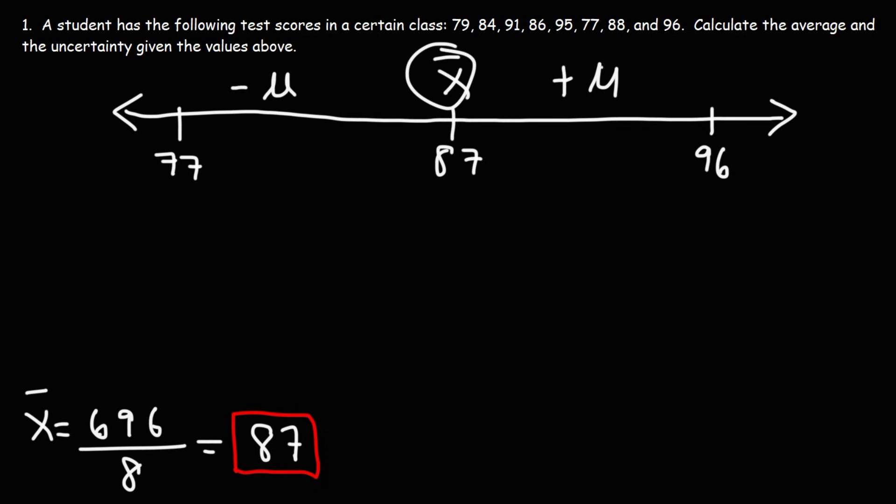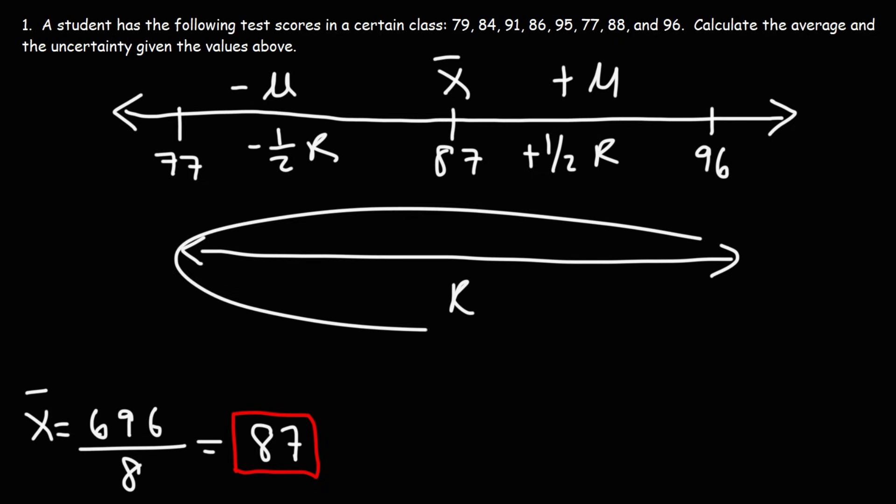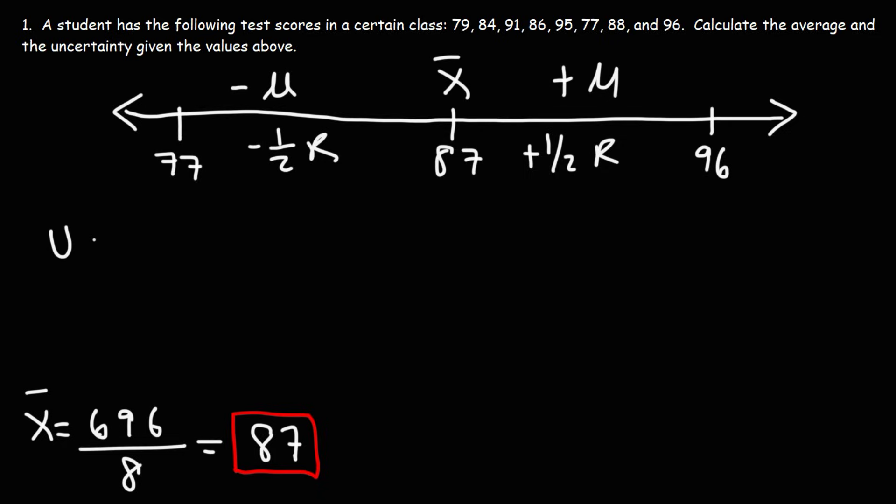So if we add the mean and the upper uncertainty we'll give us the top number. And the mean with the lower uncertainty should give us the lower part of the range. So notice this is the range here. The upper half is one half of the range. The lower half is negative one half of the range, which makes sense. So that's how you can calculate the uncertainty. The uncertainty is basically just one half the range.